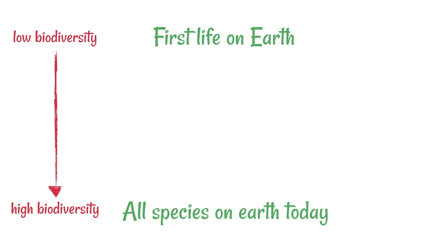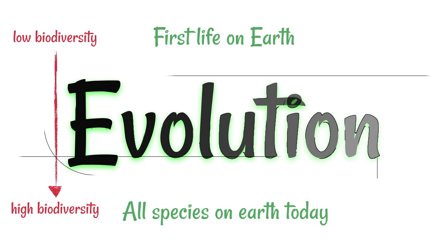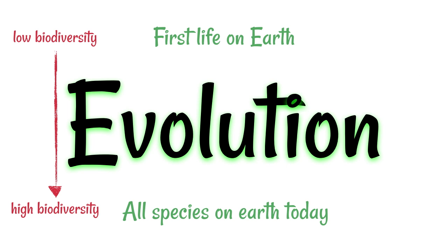This change from low biodiversity to high biodiversity came about through a process known as evolution. Evolution came about as a consequence of something called natural selection, and there's a mechanism through which this happens.